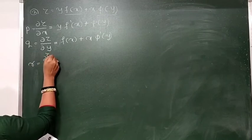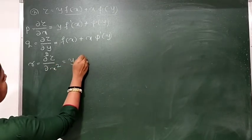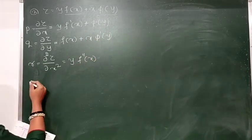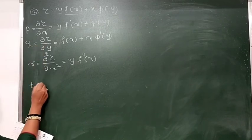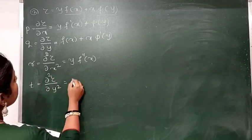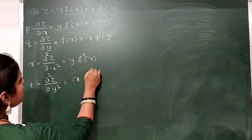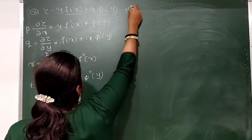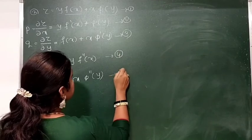Now we have to make double differentiation. R equals ∂²z/∂x² equals y times F double dash of x, and the constant term becomes 0. Next we find double differentiation for y, which becomes T. ∂²z/∂y² equals: F of x is constant so it becomes 0, and x is constant so π dash becomes π double dash of y. We call these equation 1, 2, 3, 4, and 5.